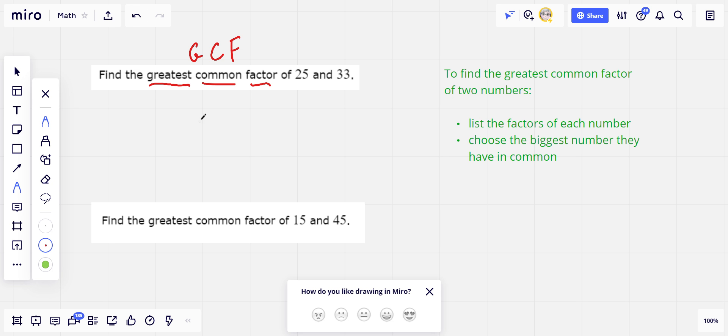So let's try that for 25 and 33. So 25, we'll start with 1 and 25. And let's see, I'll go straight up from 1. Is it divisible by 2? No, because it's an odd number. Divisible by 3? I don't think so, because 24 and 27 are, and 25 falls in the middle there.